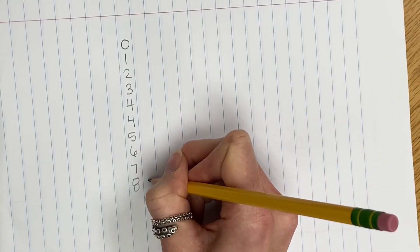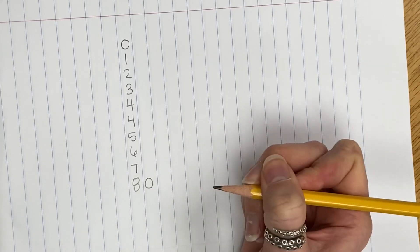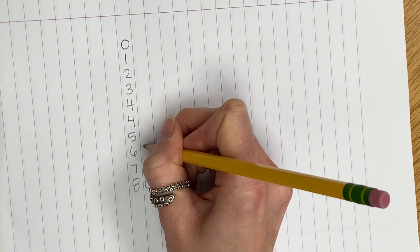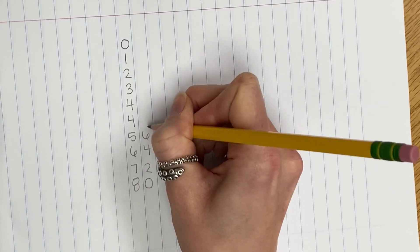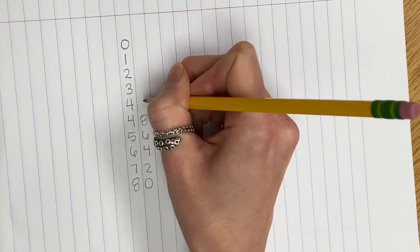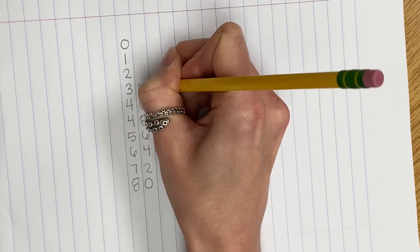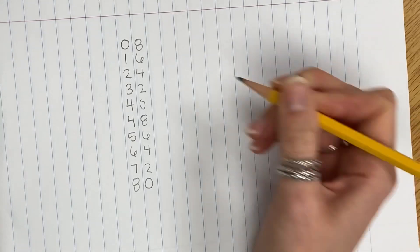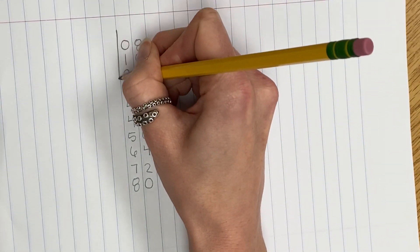I'm going to start at the bottom with a zero and count by twos going up. Zero, two, four, six, eight. Start back at zero, zero, two, four, six, eight. And I now have my multiples of eight.